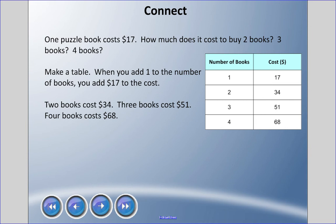Let's say a puzzle book costs seventeen dollars — a very expensive puzzle book, but maybe it's got fancy photos and glossy pages. How much does it cost to buy two books, three books, or four books? We're going to make a table here.